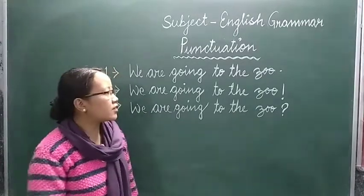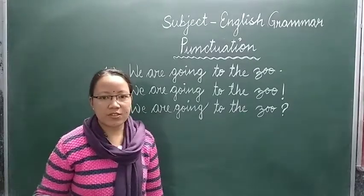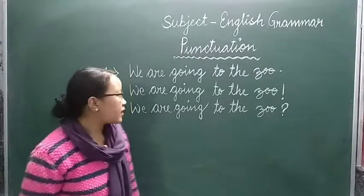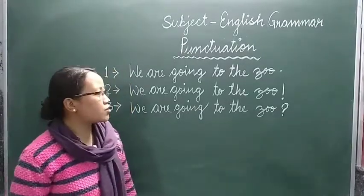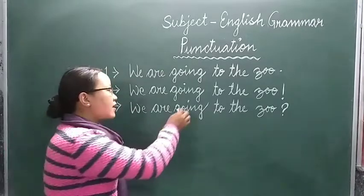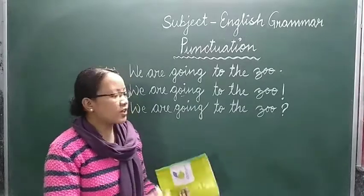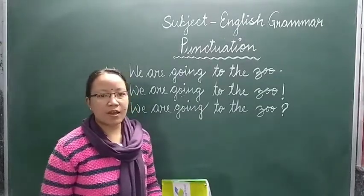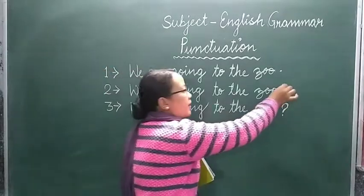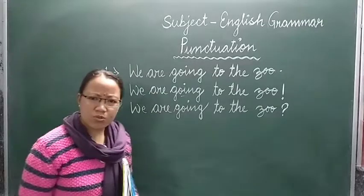This is an assertive sentence and it is only a statement — 'We are going to the zoo.' The next is: 'We are going to the zoo?' And the third is: 'We are going to the zoo!'